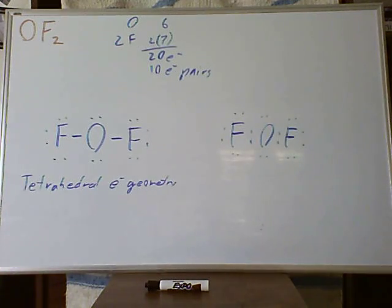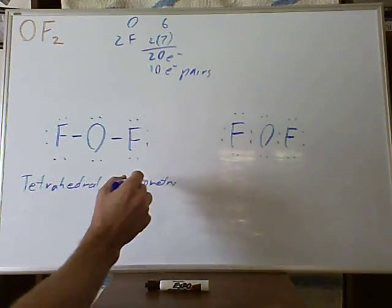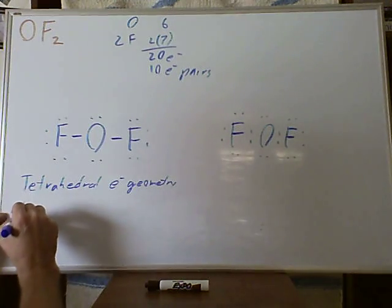There can only be 2 geometries for 3 atoms, either linear or bent. And the tetrahedral does not allow a linear combination whatsoever, so this has to be bent. So we have a bent molecular geometry.